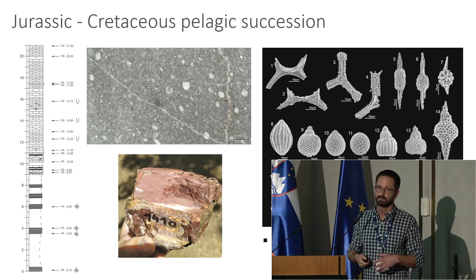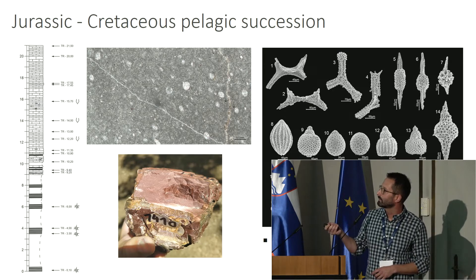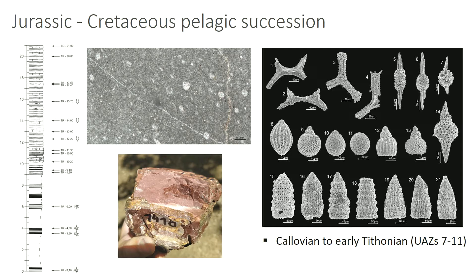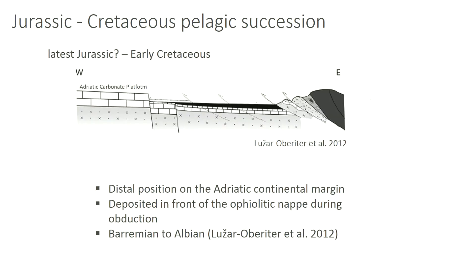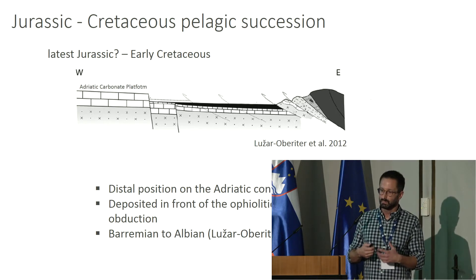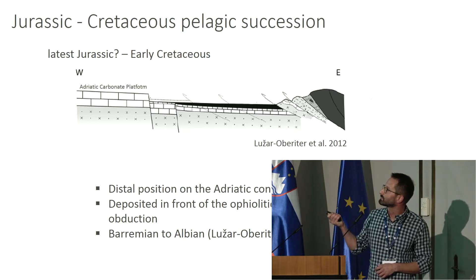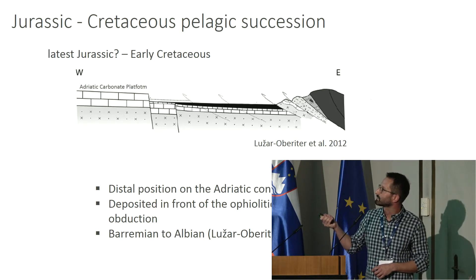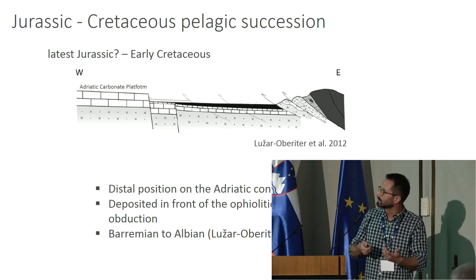Because of regional correlation we can assume that this deposition of radiolarites starts even earlier, in the Bajocian. Somewhere in the Tithonian, as already Peter said in his talk, pelagic limestones replace the radiolarites. The limestones are again full of radiolarians, however calcitized, and there are also calciturbidites. Above this there are turbidites with Ophiolitic detritus. This would be the model for deposition of this pelagic sequence in Mount Ivanščica — because of this late Jurassic deposition of turbidites containing Ophiolitic detritus, we can assume a distal position on the continental margin, deposited in front of the advancing Ophiolitic nappes during obduction.